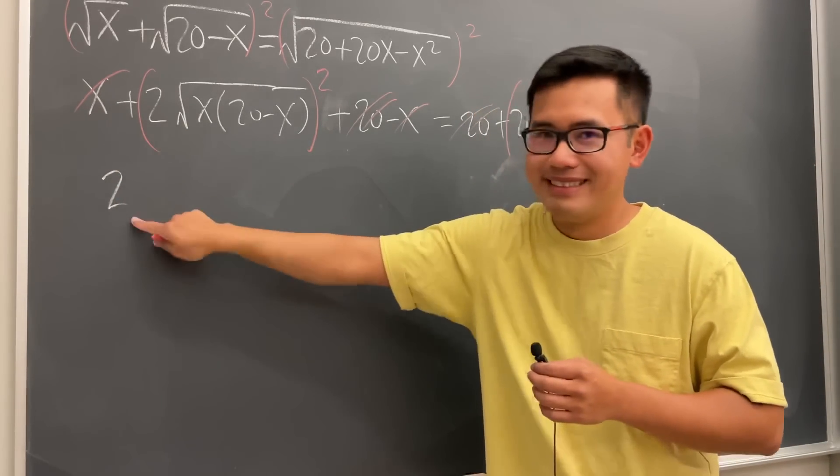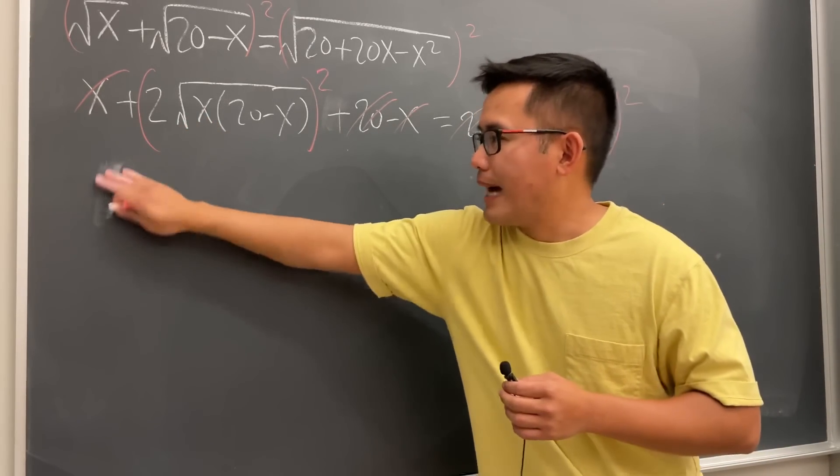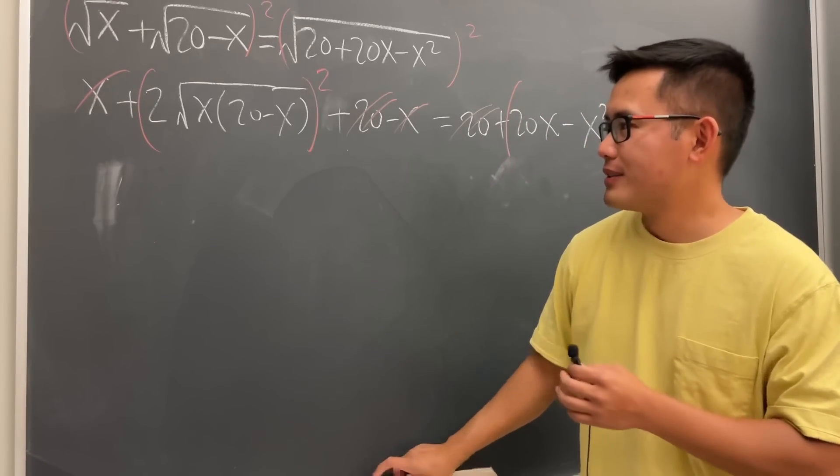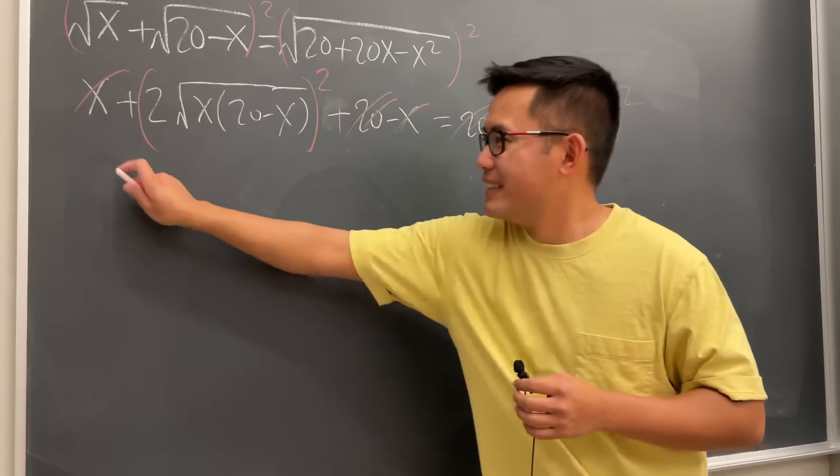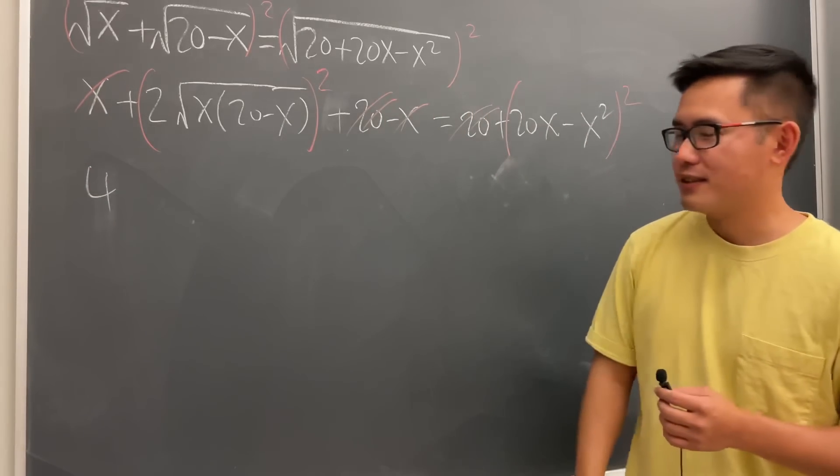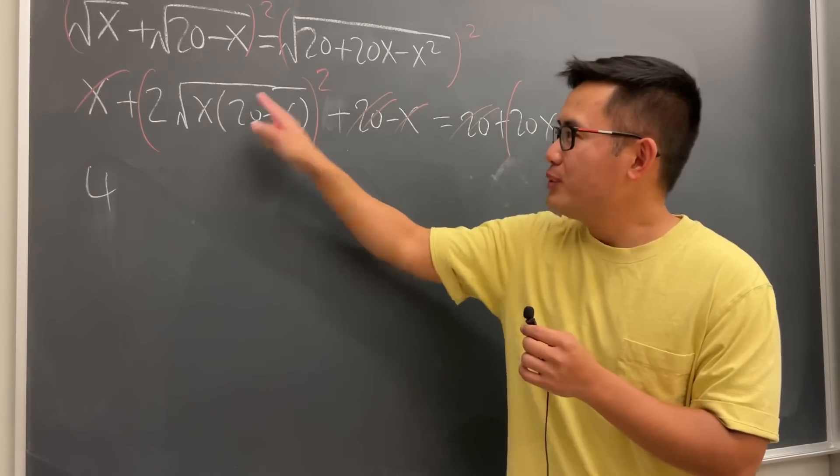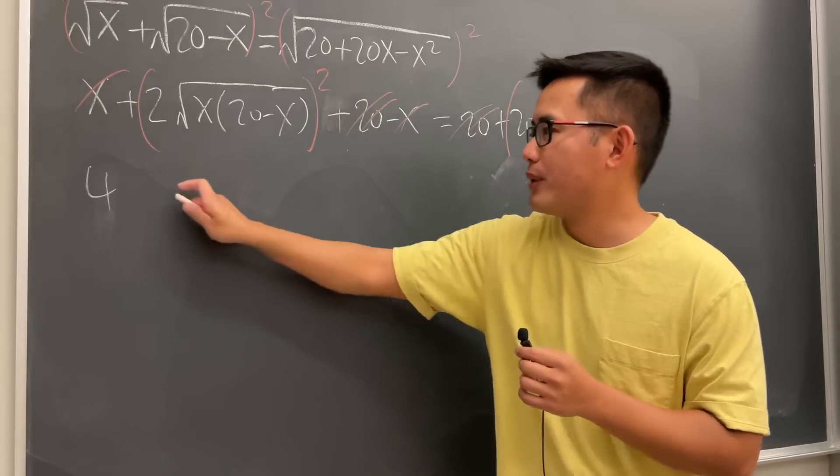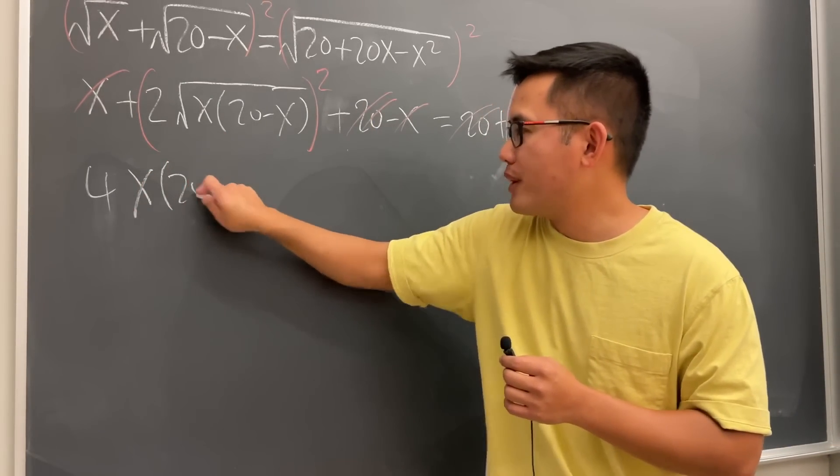For this, I'm just going to write it as 2 squared is 4. Square root square cancel. We'll just have the input, so it's just x times 20 minus x.